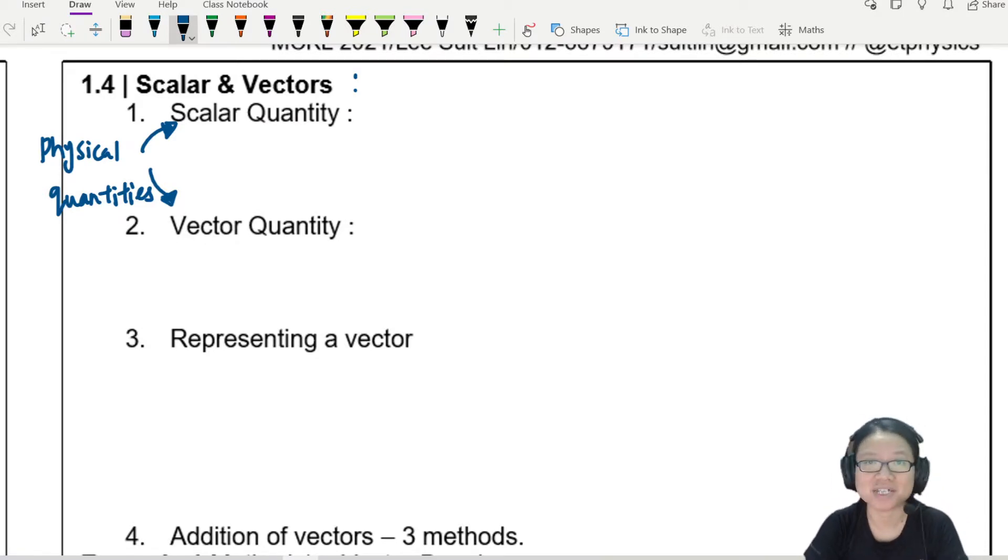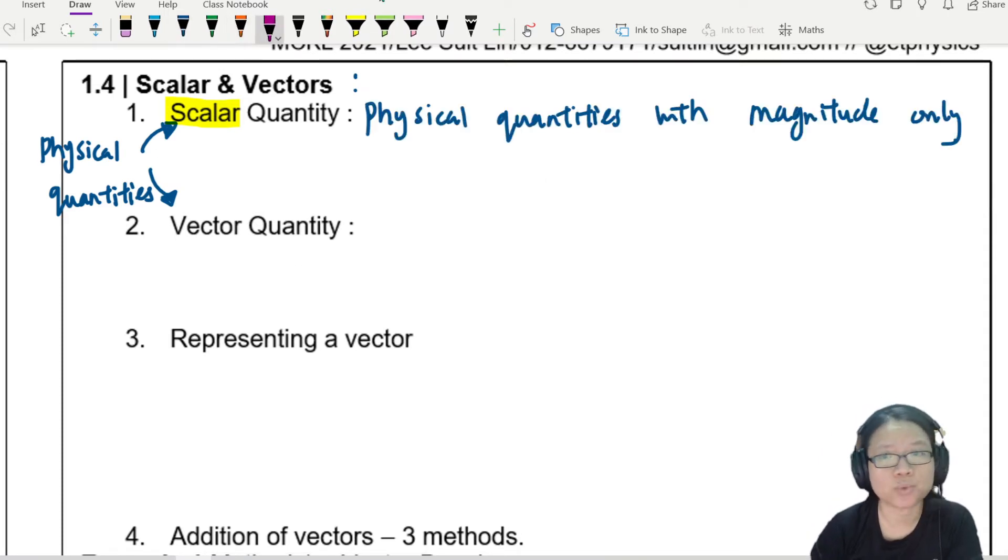As mentioned just now, physical quantities can be classified into scalar quantities and vector quantities. Whenever you see the word scalar, it means the only thing that matters or is meaningful is the magnitude. For example, if I were to measure the mass of the chicken inside the minecart, that would be a scalar quantity. You're not going to say that the mass of the chicken is 2 kg to the right, because that makes no sense. Scalar quantities are physical quantities with magnitude only.